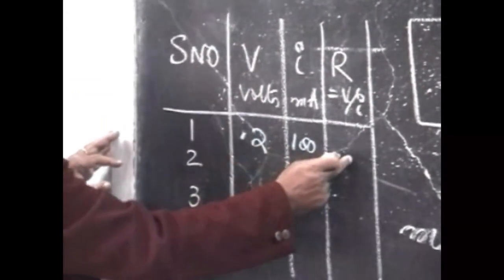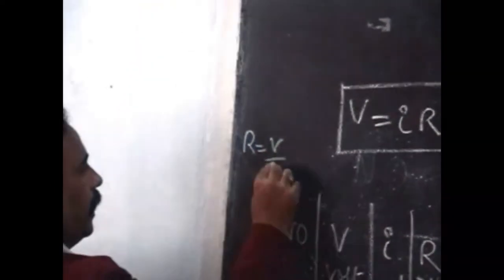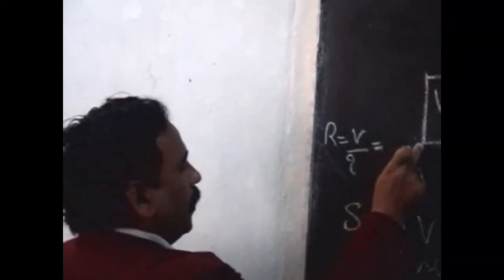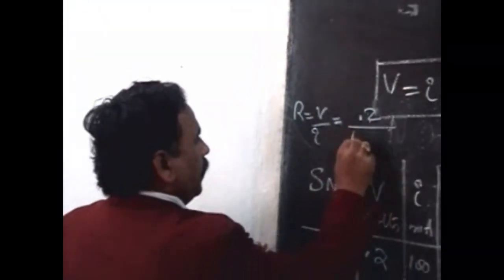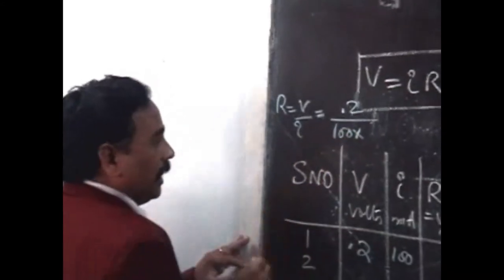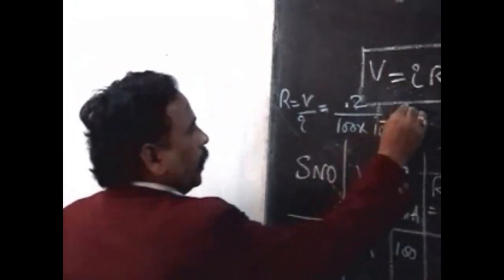To calculate the resistance for this particular reading, R is equal to V by I. Here V is 0.2 and I, it is in milliamperes, therefore 100 must be multiplied by 10 to the power minus 3.